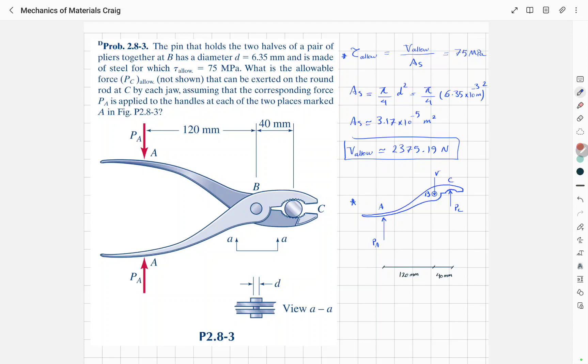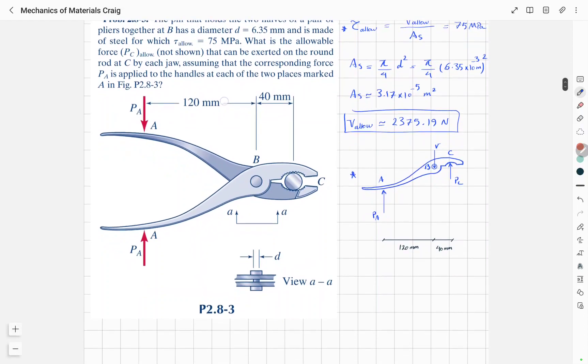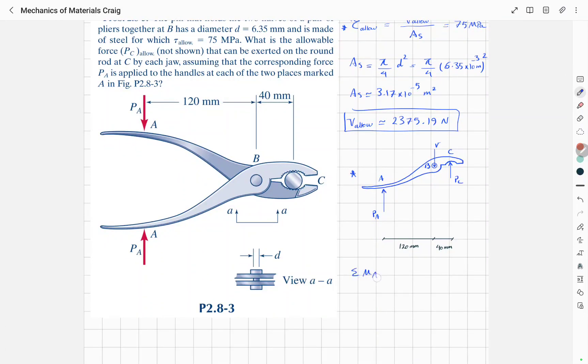Now if we use this diagram again and write the equation of equilibrium for the moment at point A, we can say sigma Ma in this direction is equal to zero. So V multiplied by 120 minus Pc multiplied by 160 is equal to zero.